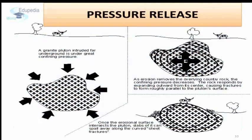Pressure release: rocks at depth are subjected to the pressure of overlying rocks and thus tend to occupy as little space as possible. When overlying rocks are eroded, usually due to a landslide or glacier, the release of pressure allows the newly exposed rock to expand, leading to the formation of fractures parallel to the surface.